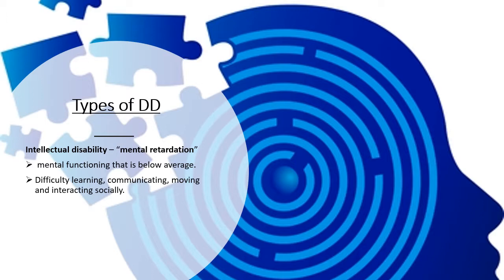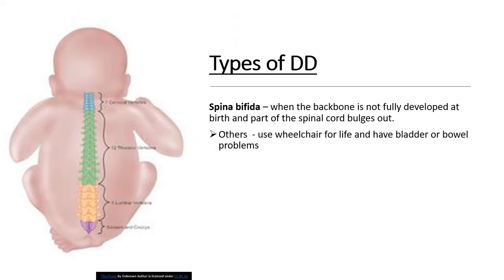Intellectual disability, also called mental retardation, means mental functioning that is below average, with difficulty learning, communicating, moving, and interacting socially. Spina bifida is when the backbone is not fully developed at birth and part of the spinal cord bulges out. Some individuals use a wheelchair for life and may have bladder or bowel problems.